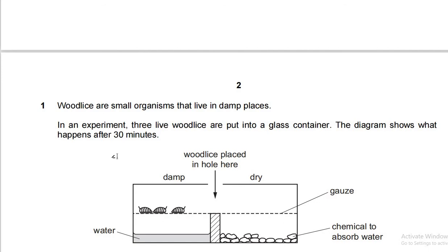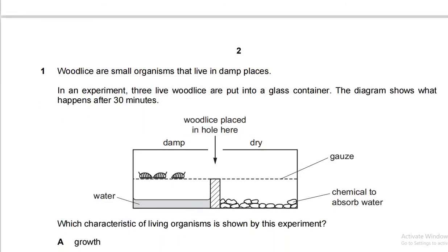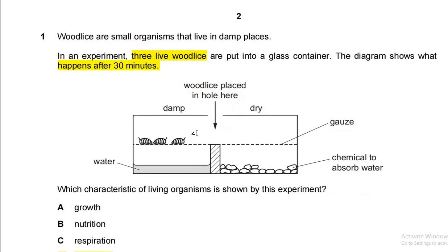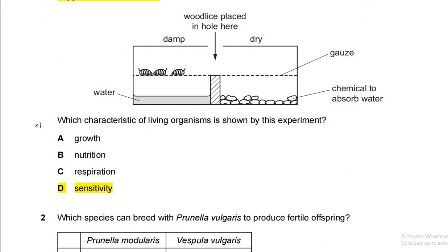Question one: wood lice are small organisms that live in damp places. In an experiment, three live wood lice are put into a glass container. The diagram shows what happens after 30 minutes. They were placed in the center, and after 30 minutes they moved towards the damp side. There is water on one side, a chemical to absorb water on the other, and a gauze to keep the lice afloat. The question asks which characteristic of living organisms is shown by the experiment.